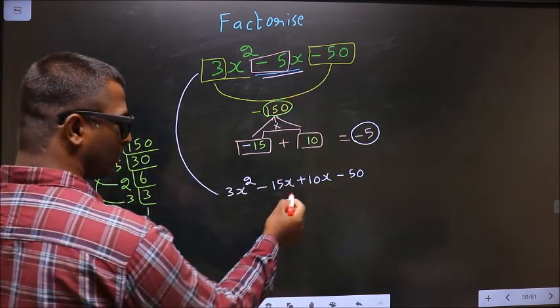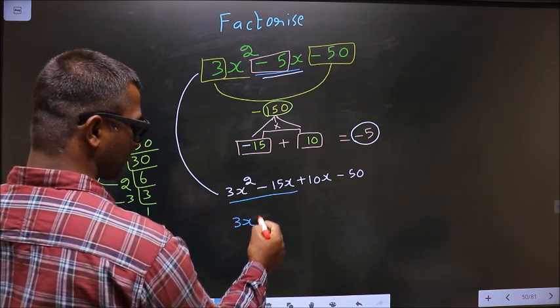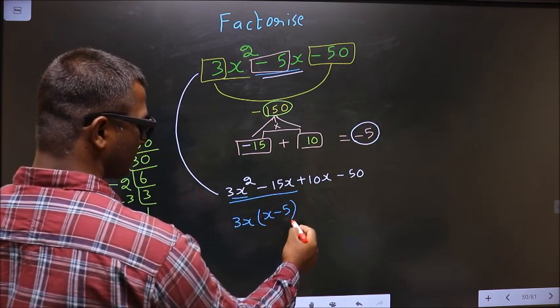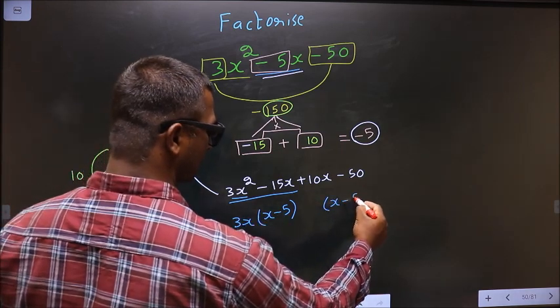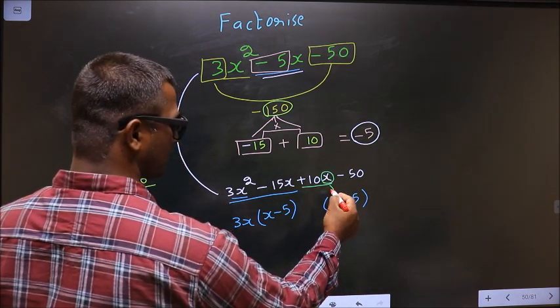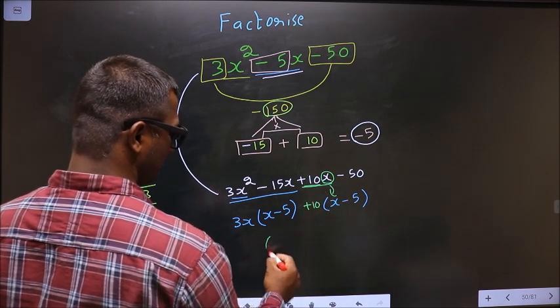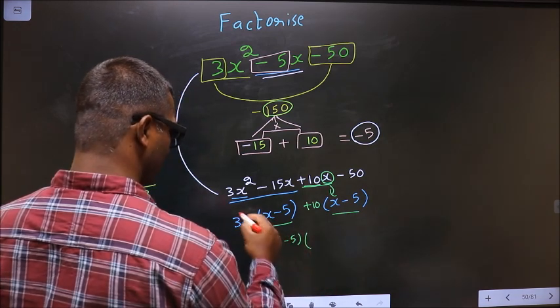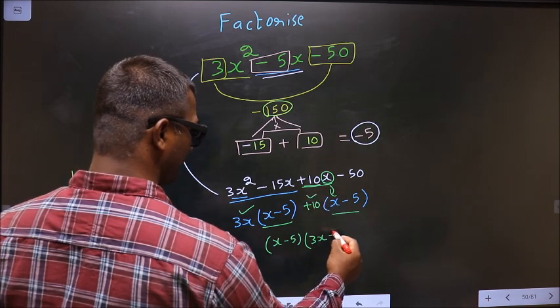Next, take out 3x common from the first two terms. You get x and -5. Whatever you got here should also appear here. From the remaining terms, x has gone inside, so outside you're left with +10. Now take (x - 5) common: you have 3x and +10.